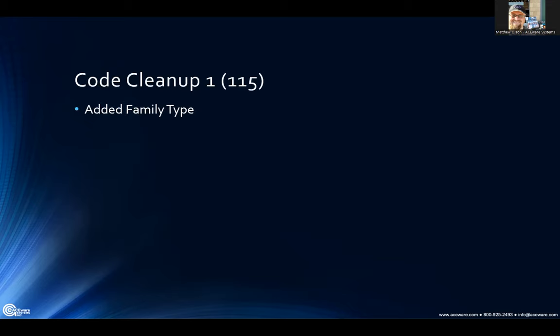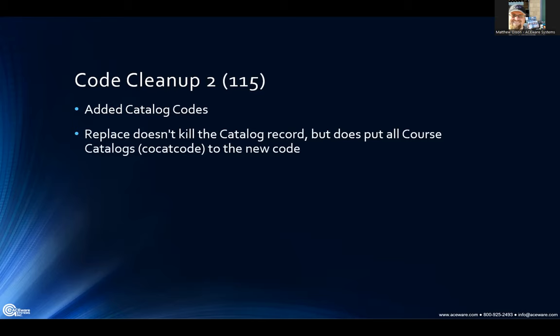Code cleanup. Added the family type to the codes — probably just an oversight why that was never added before. Somebody was looking for that, so we added it. Since it was fresh in mind, we also did a catalog code cleanup. This allows you to delete or deactivate old catalog codes. Doing a replace does not combine the two catalog records like it does on other codes, but any courses that have the replaced catalog code get updated to the new catalog code. So it does help you clean those up if you need to.